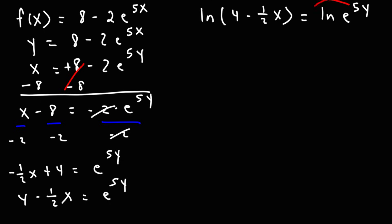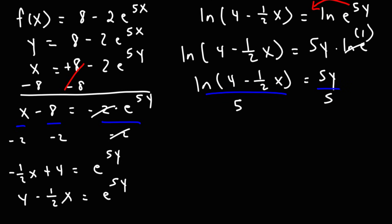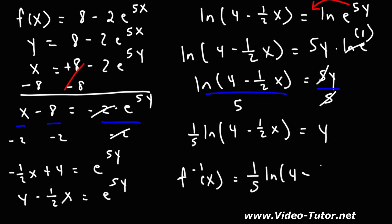We can move the entire exponent — the 5 and the y — to the front. So we have ln(4 minus 1 half x) is equal to 5y times ln(e). And we know ln(e) equals 1, so this is simply equal to 5 times y. Now divide both sides by 5. So we can rewrite this as 1 fifth times ln(4 minus 1 half x) equals y. So our final answer — the inverse function — is 1 fifth times the natural log of (4 minus 1 half x).